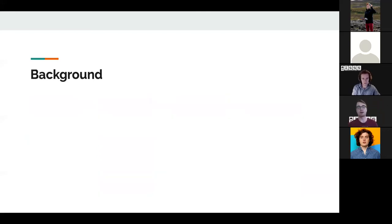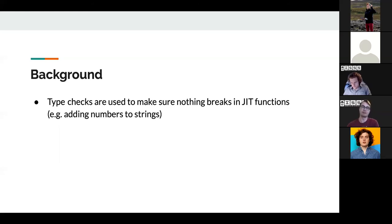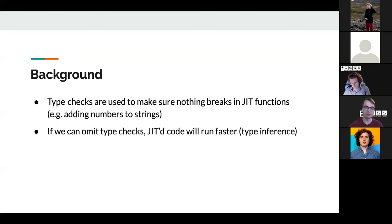With that in mind, we can talk about a full example: going from a single bug in Firefox's JavaScript engine to a full exploit. A couple of background points first: type checks make sure nothing breaks when we're adding numbers to strings. We need to check that types are actually numbers before jumping into a compiled function, otherwise we'll do things that break the JavaScript engine. But the JIT is always trying to optimize and get rid of unnecessary operations, so many optimizations involve omitting type checks — if one function always passes a number to another, we never need that type check.